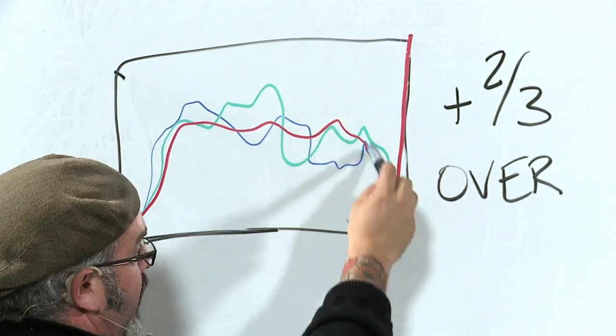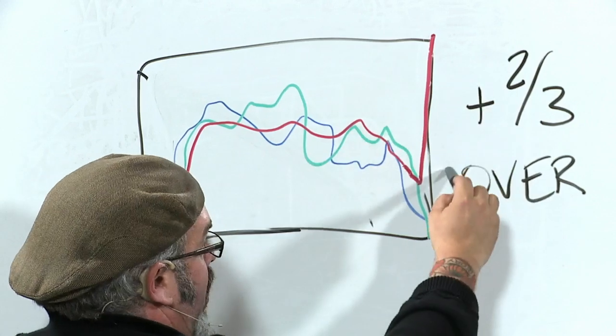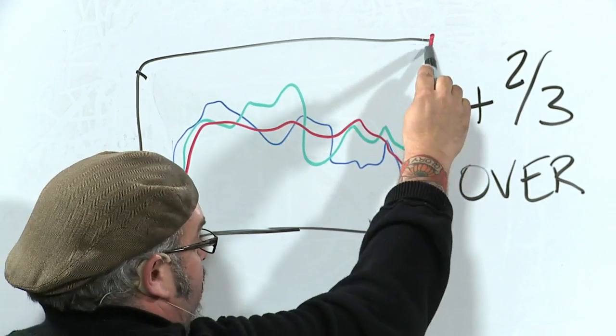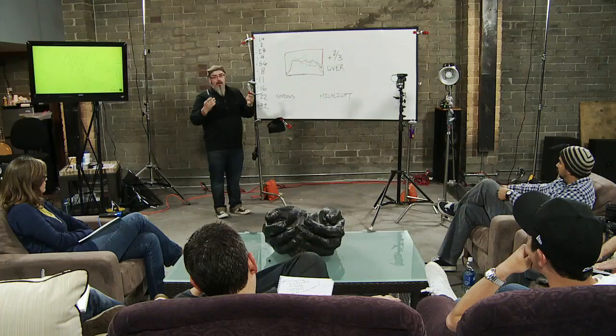So therefore, if I bring my exposure down two-thirds of a stop, that red spike disappears and I keep all the information in all of the channels.